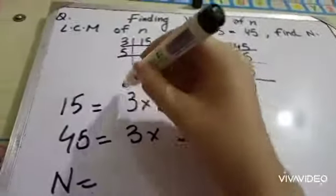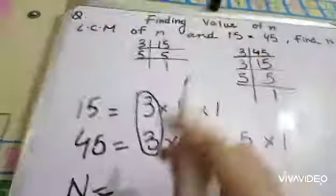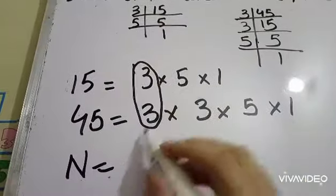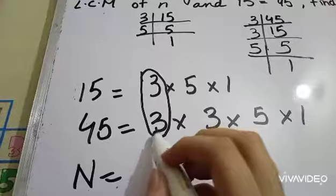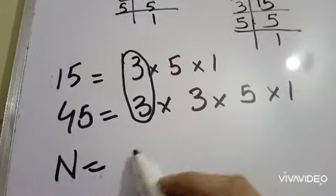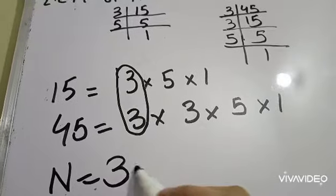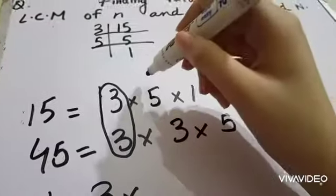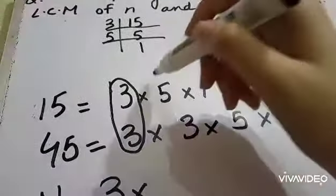So you can see 3, both are like common. The first factor of 45 is 3, so we're going to write here 3, and then circle the common factors.